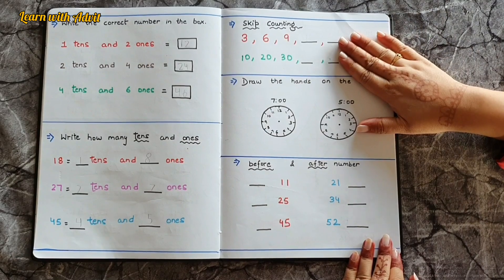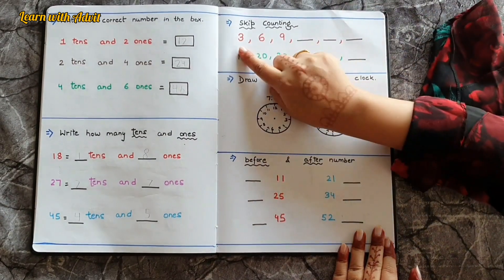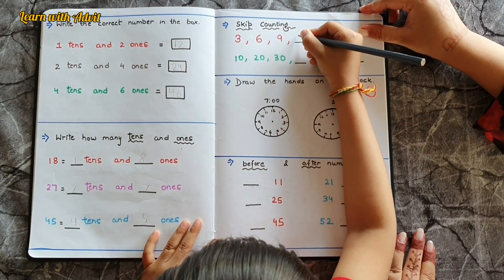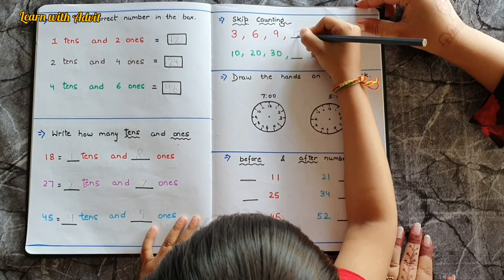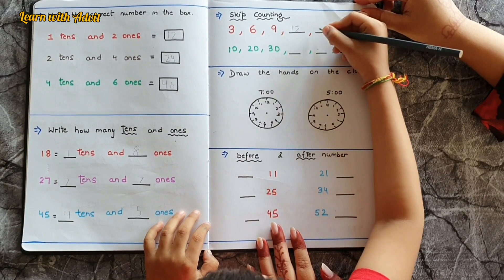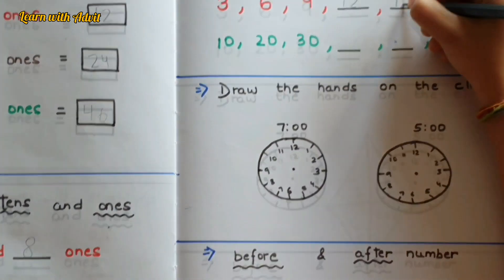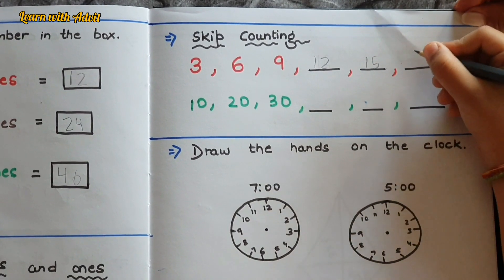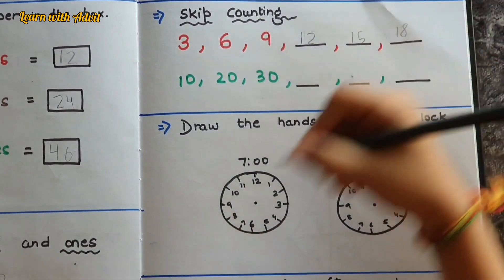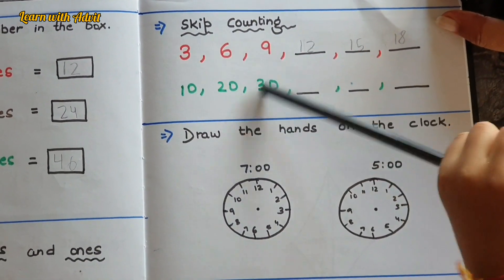In this sheet you have to do skip counting of three and ten. Three, six — then six, nine — then 12 — yeah! And 15 — yes! And 18 — yes! This is the skip counting of three. Now for ten: ten, twenty, thirty.